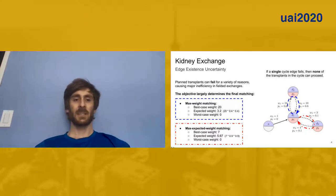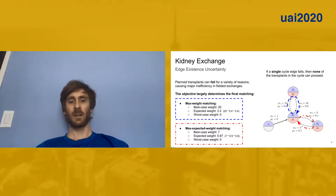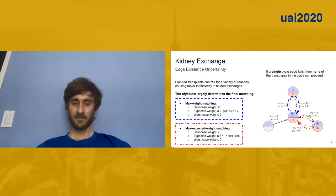Instead, we might decide to maximize the expected weight of a matching. In that case, we would choose this other two cycle down here in the bottom, which would give us a best case weight of seven. But it's fairly likely that one of these edges will fail and we'll get an expected weight of 5.67. And again, in the worst case, one or both of these edges would fail and we would get zero weight.